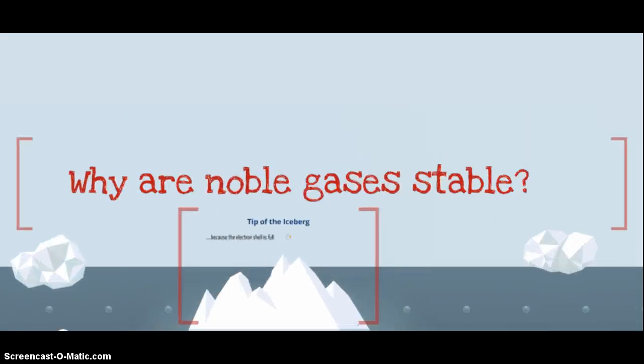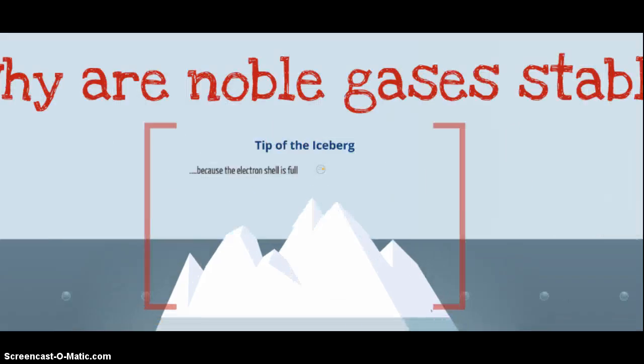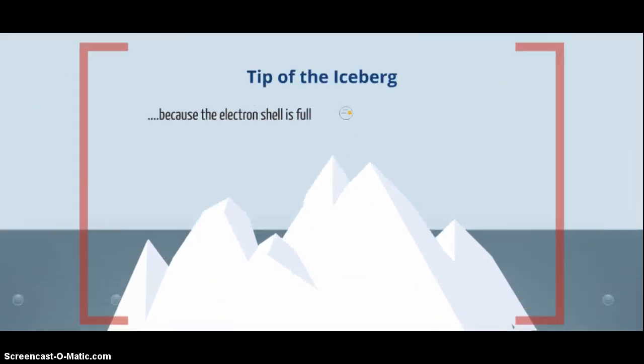Most of the time when you hear the answer to this response, you just get the tip of the iceberg. The answer might be something like this: noble gases are stable because the electron shell is full. But if you think about it, that's really not an answer.